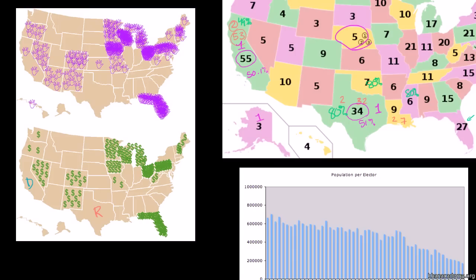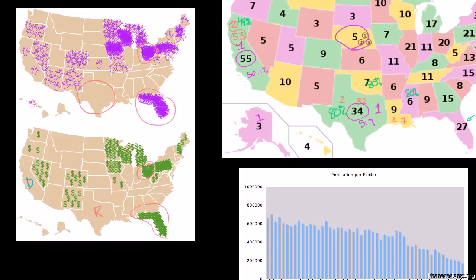Each hand icon represents a visit and each dollar sign represents a million dollars spent on ads in those final five weeks. California and Texas — the two biggest states — didn't even reach the threshold for a dollar sign; they didn't spend a million dollars there, and Texas had zero visits in the final five weeks. Candidates spend a disproportionate amount of attention and money in swing states, so people in Florida and Ohio received far more attention per person than people in Texas did.